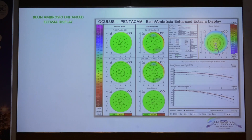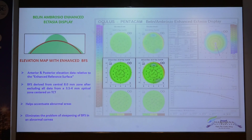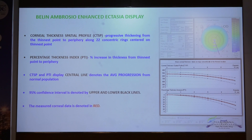This is the Belin Ambrosio Enhanced Ectasia display. It shows the elevation map with standard BFS calculated over a fixed optical zone of 8 mm, then the elevation map with enhanced BFS, wherein we exclude the data from 3.5 to 4 mm centered around the TCT, which helps to accentuate abnormal areas. This is the difference map. The CTSP, or corneal thickness spatial profile, gives the progressive thickening from the thinnest point to the periphery along 22 concentric circles. We have the PTI, which is percentage increase in thickness from the thinnest point to the periphery, and it should be within the central line or the upper and lower black lines, which indicate 95% confidence limits.